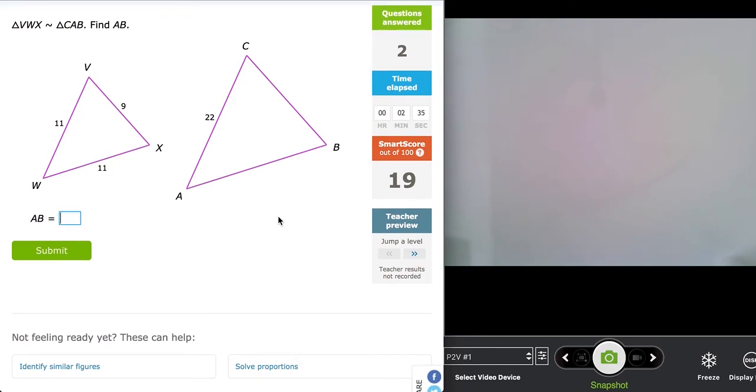So the angle measurements are the same when we have two similar figures. However, their side measurements are proportional to each other when you relate the corresponding parts.